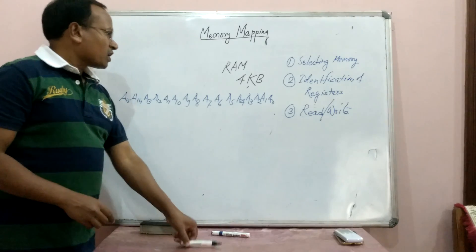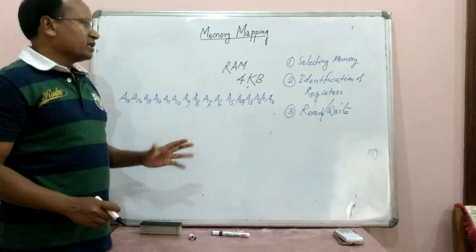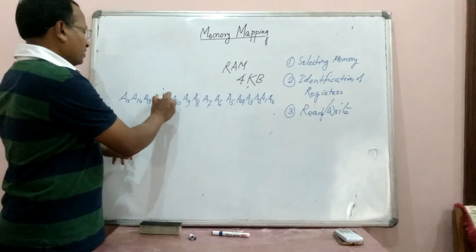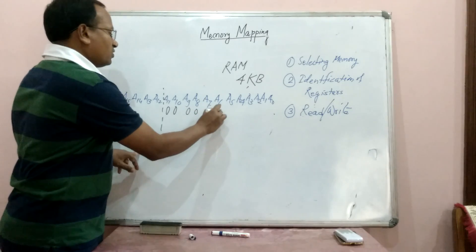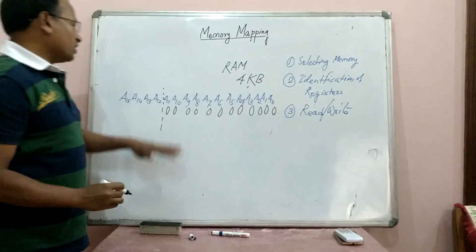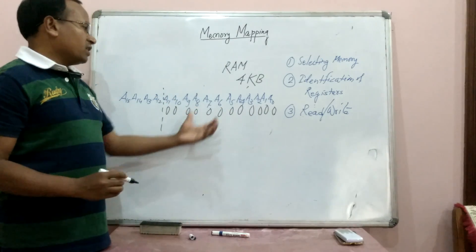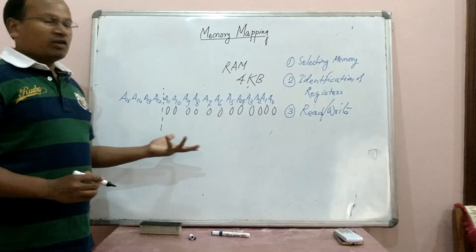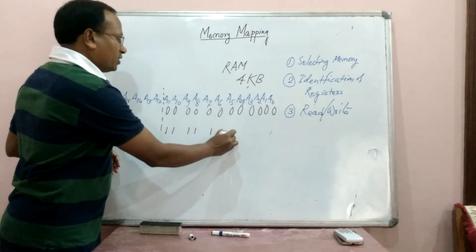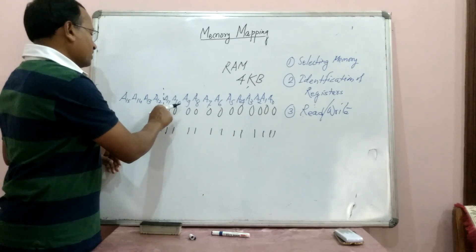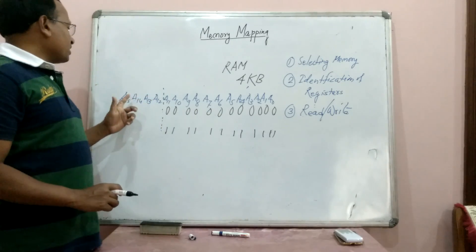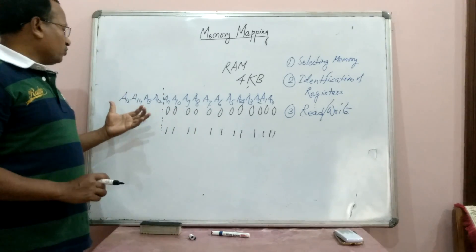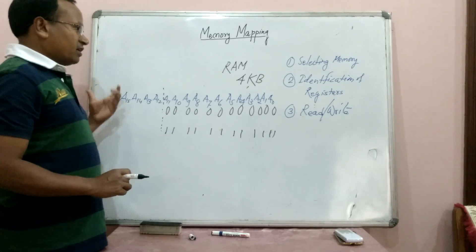When working with this 4KB RAM, we identify registers based on 12 address lines — A0 to A11. In the beginning address, all 12 lines are 0; in the last address, all 12 lines become 1. Address lines A12, A13, A14, and A15 are not used for register identification, so we use these 4 lines for selecting the chip — the memory device. The RAM will have two control signals: read-bar and write-bar, because it is a random access memory, not a read-only memory. The data lines are directly connected to the data bus of the microprocessor.